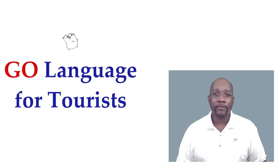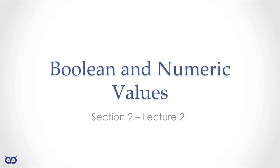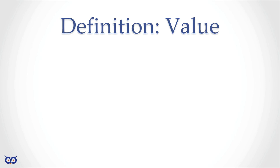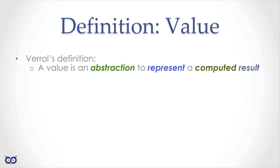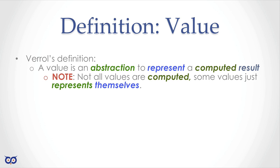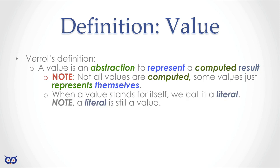Hi, my name is Feral Adams and this is GoLang for Tourists. Welcome back to lecture two, section two. Today we're going to be looking at Boolean and numeric values. Before we jump into some code, let's get an understanding of what we mean when we say a value. I would say a value is an abstraction to represent a computed result. Note that some values are not computed — they just represent themselves. An example is what we call a literal.